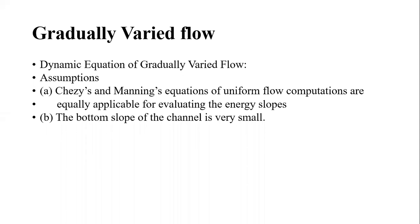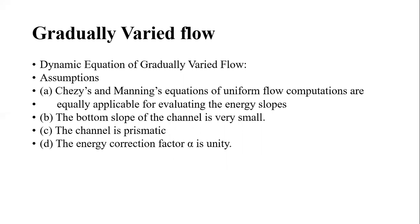Second assumption: the bottom slope of the channel is very small. Third assumption: the channel is prismatic — its cross-sectional shape, bed slope, side slopes, and roughness coefficient are all constant throughout the channel length. Fourth assumption: the energy correction factor alpha equals 1, meaning the velocity distribution is uniform.